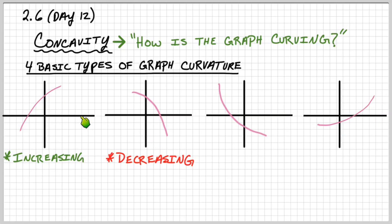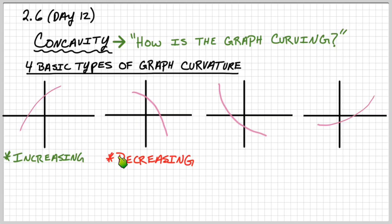So when we classify these graphs, they're going to be either concave up or concave down. In the case of these two — this one's increasing, this one's decreasing — but they're both concave down. So both these types of graphs are concave down.